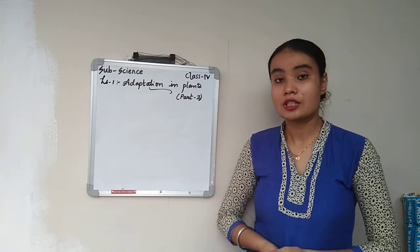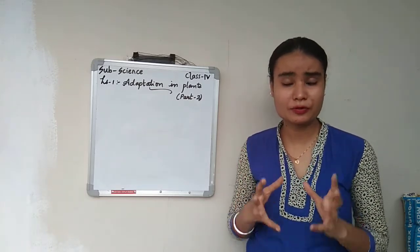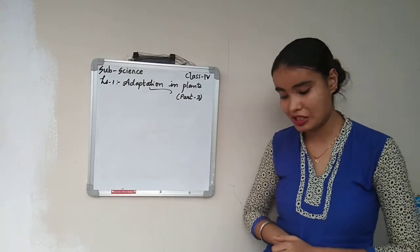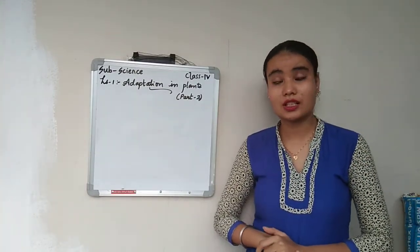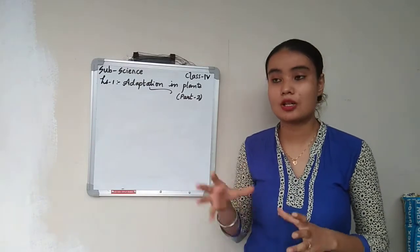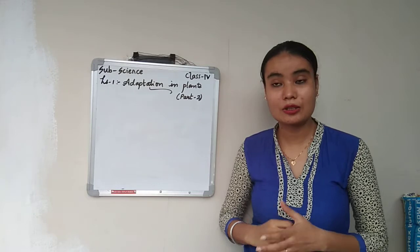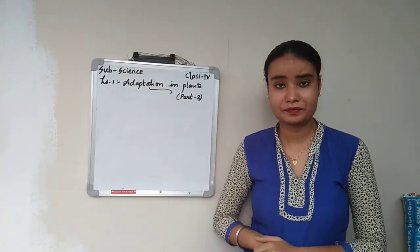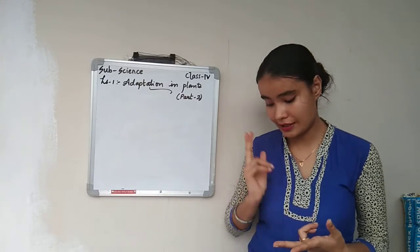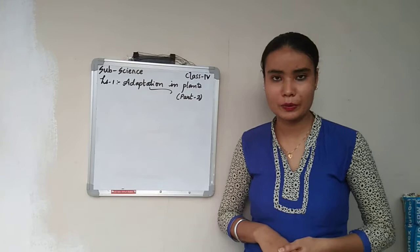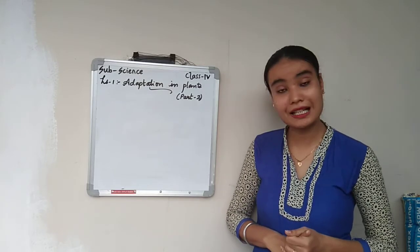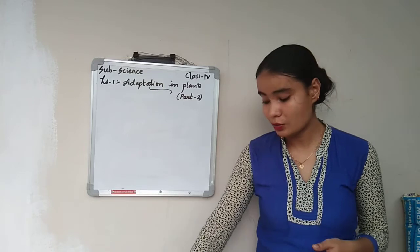Before we start Part 2, I want you to take a few seconds and recollect what we learned in Part 1. In Part 1 we learned about adaptation in plants — adaptation is the different methods which plants adopt to survive, like how to disperse seeds, how to take sunlight, how to store water and food. We also learned that plants are classified into two types: aquatic (water) plants and terrestrial (land) plants. In Part 1 we discussed aquatic plants, which are of three types: free floating, fixed floating, and underwater plants.